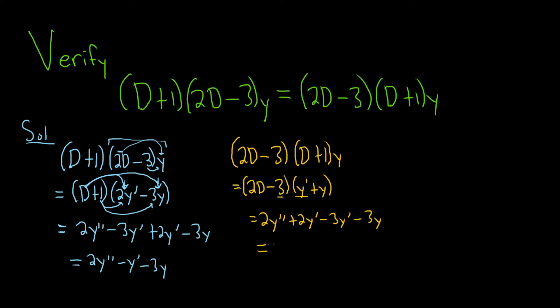Look at that, it worked. We have 2y double prime, and combining these middle terms we get minus y prime minus 3y. That verifies that the left hand side equals the right hand side. Just a simple example to get practice with operator multiplication. It's just like regular multiplication except you're taking derivatives.